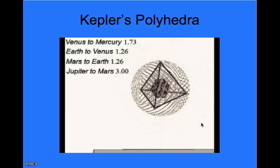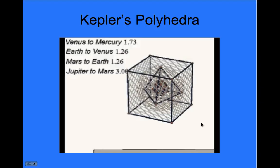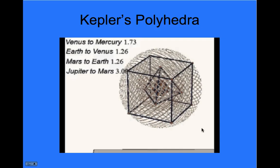And finally, shrink that whole thing down, stick a cube around that sphere, and a sphere around that cube, and that tells us approximately the ratio of Saturn to Jupiter.